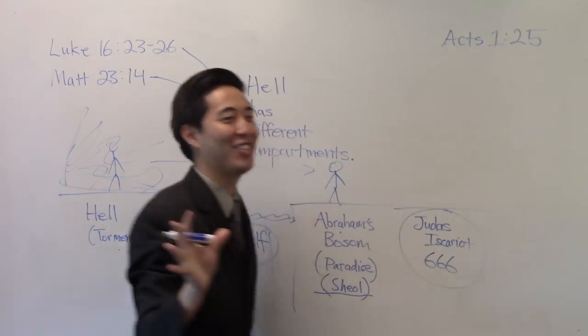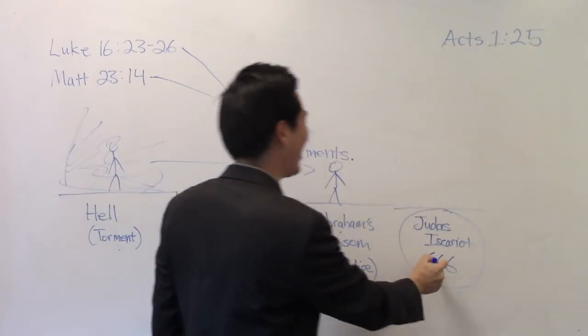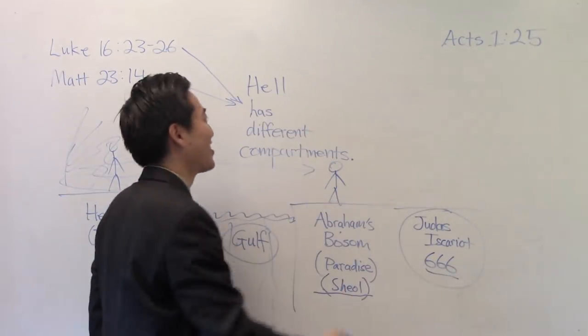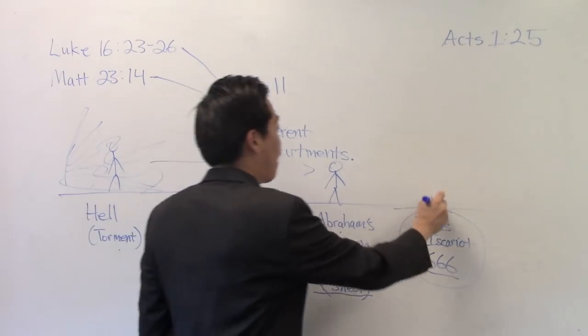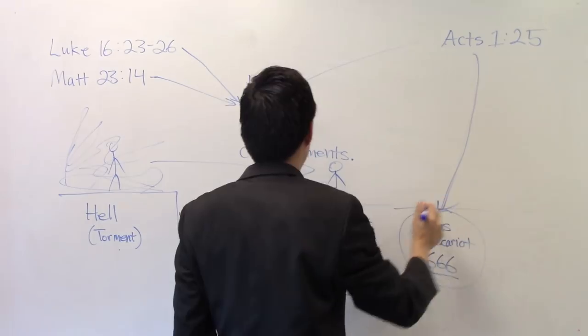Look at that. So notice in Acts chapter 1 and verse 25, Judas Iscariot, after he died, he went to his own place. So we'll put right here Judas Iscariot's, and probably his apartment room number is 666. That's not Bible, I'm just making things up. That's not Bible. Yeah. Say like Kushner, there you go. 666. So we see right here, definitely, these are all proofs that hell has different compartments.